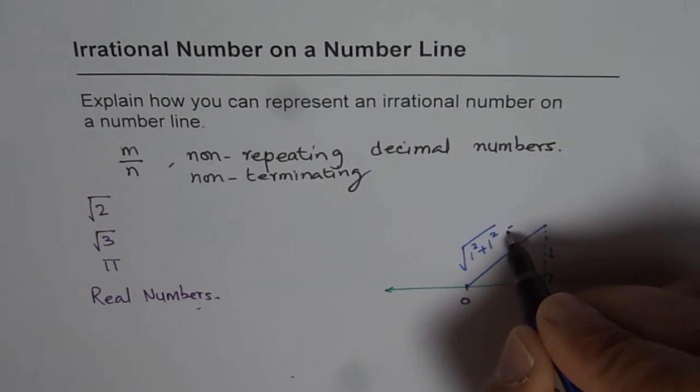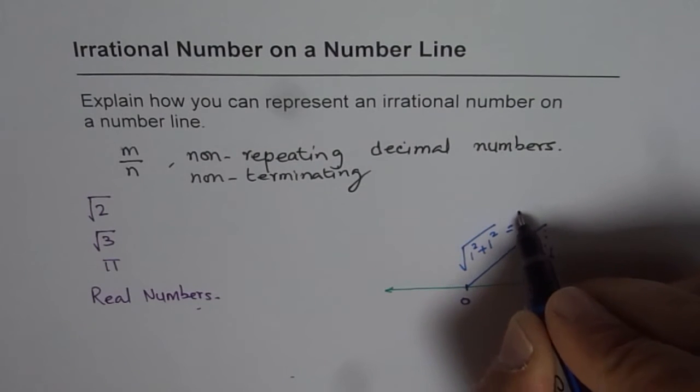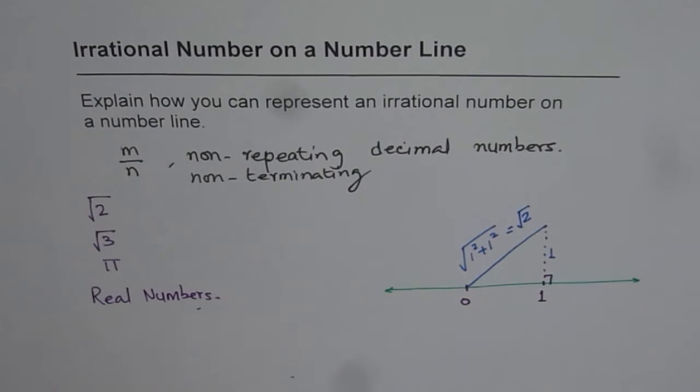Which is equal to 1 square is 1, 1 plus 1 is 2, which is square root of 2. So we actually get exact length of square root 2.